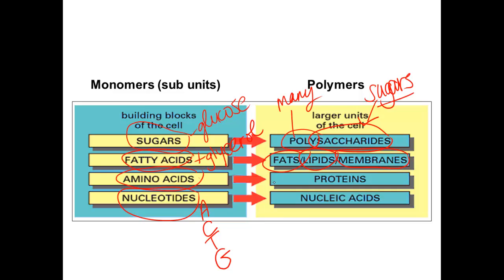Amino acids joined together to make proteins. And nucleotides, A, C, T, and G, join together to make nucleic acids, which are DNA and RNA.